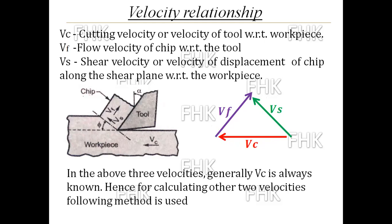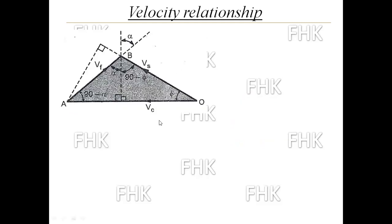Among the three velocities VC, VF, and VS, VC is always known — that is, the velocity of the tool is always known and can be measured by some measuring instrument. Hence for calculating the other two velocities, the following method is used: these three velocity components form the three sides of triangle A, B, O, and I draw one construction line perpendicular to side AB to form two different right-angle triangles.